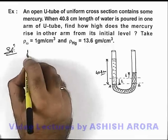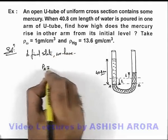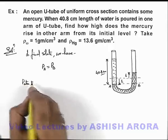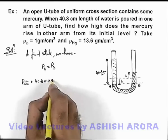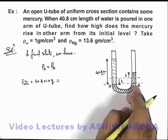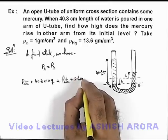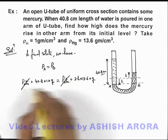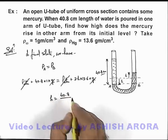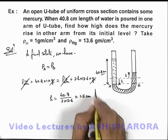So we can directly write, in the final state, pressure at point A must be equal to pressure at point B. Pressure at A can be written as P-atmospheric plus 40.8 multiplied by 1 (density of water) into g. This equals P-atmospheric plus 2h multiplied by 13.6 (density of mercury) into g. P-atmospheric and g cancel out, so h equals 40.8 divided by (2 × 13.6), giving h equal to 1.5 centimeter. That is the answer.